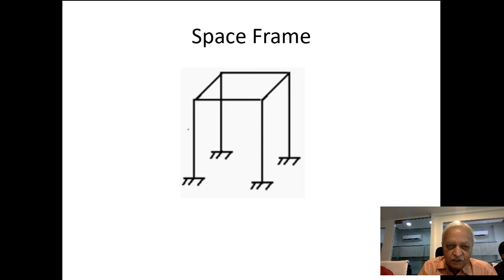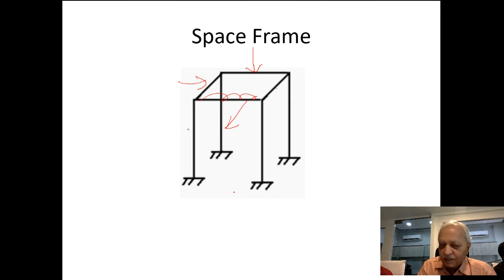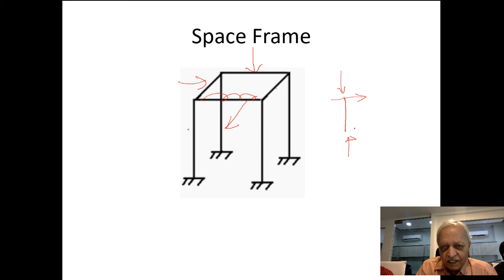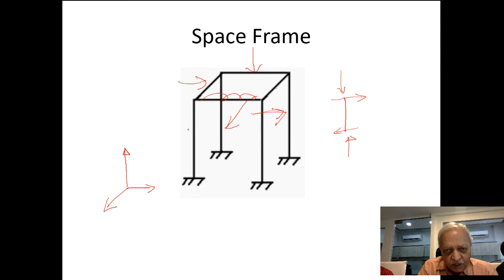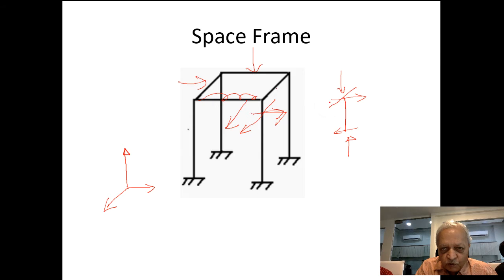For a space frame — a three-dimensional structure — under any type of load (UDL or otherwise), any member can have axial force (tension or compression) and shear force in two directions. If the member lies along x and the horizontal plane is x-y with z vertical, there may be shear in the x-direction and shear in the y-direction, giving two shear forces perpendicular to the member.